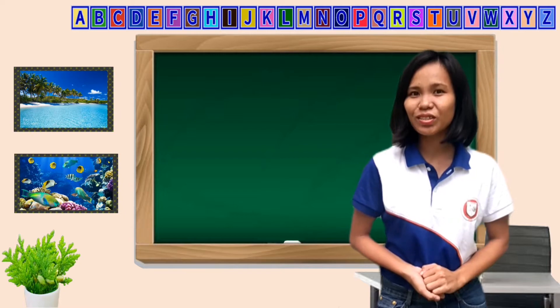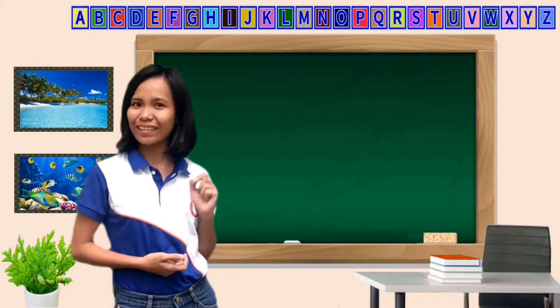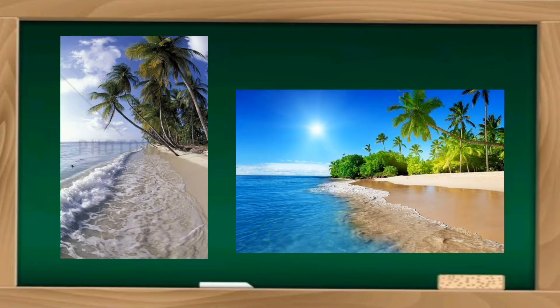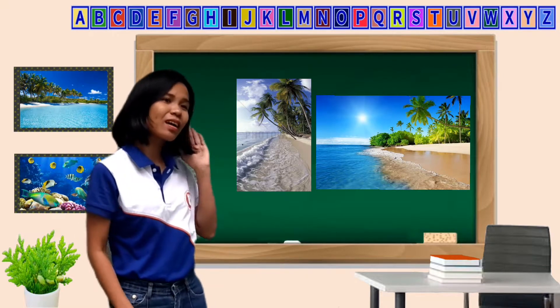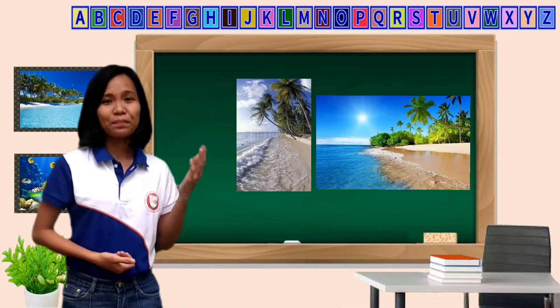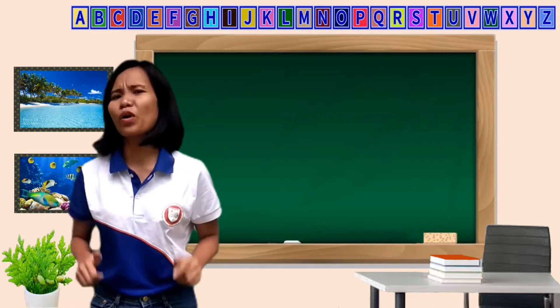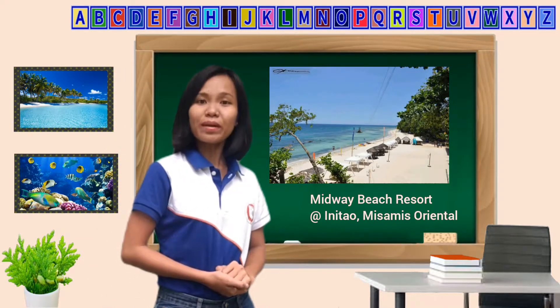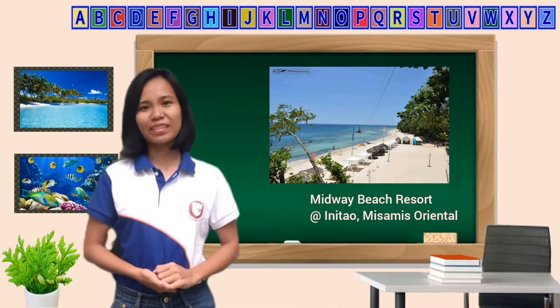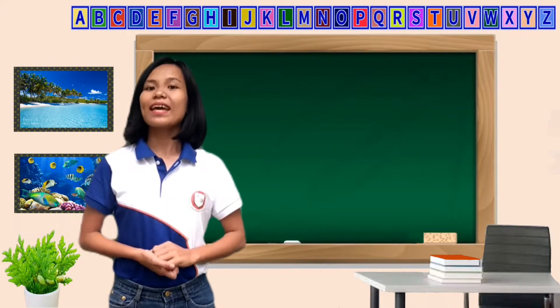By the way, class, do you like to go to the beach? That is really fun! Now, I'm going to show you some pictures — guess what it is. What can you see in this picture? What is that place? Yes, you're all right! It's a beach, it's also a seashore, it's also a bay. We have beaches and seashores here in the Philippines. This is the Middle Beach Resort that we can find locally at Initao, Misamis Oriental. Class, don't you know that these beaches, seashores, and bays are also called the intertidal zone.